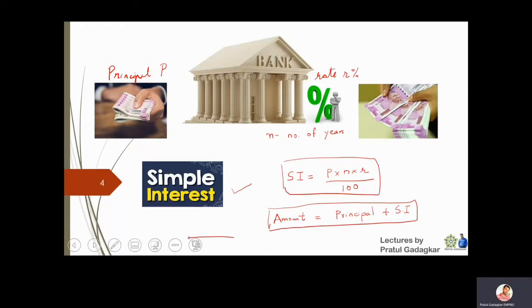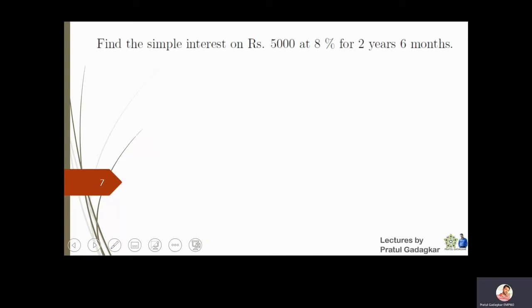Now let us see some problems based on this topic. Here we are supposed to find the simple interest on rupees 5000 at 8 percent — so 5000 becomes the principal and 8 percent becomes the rate — for two years and six months.